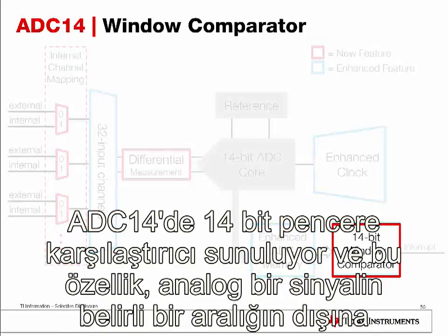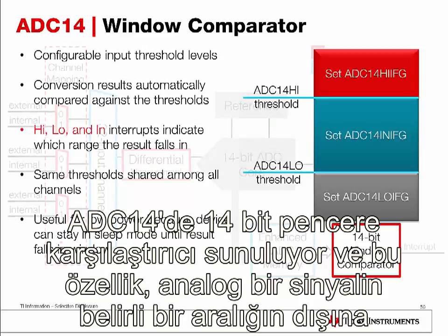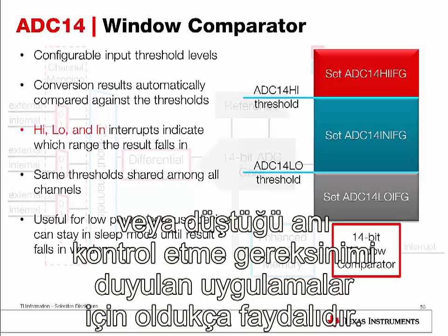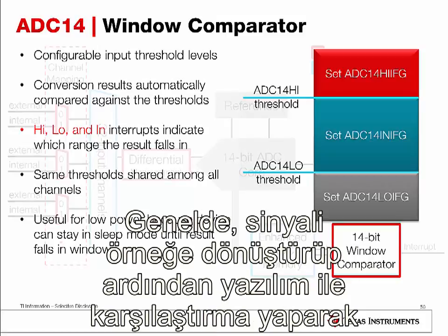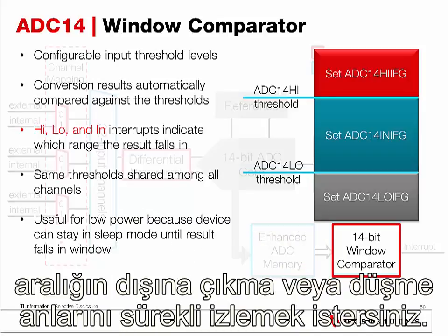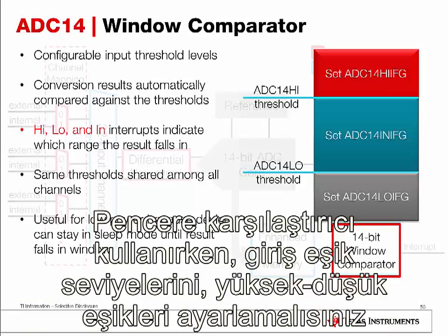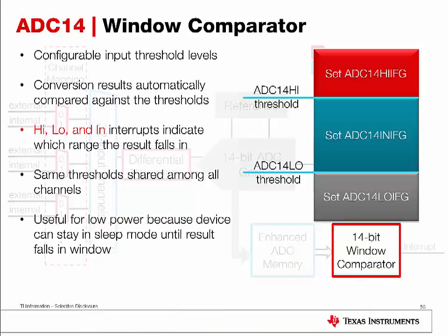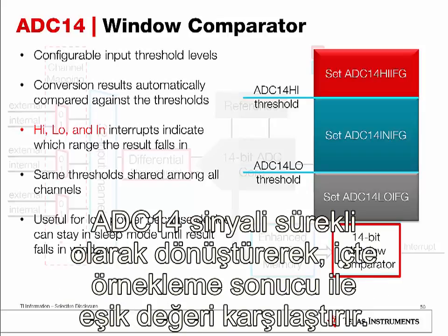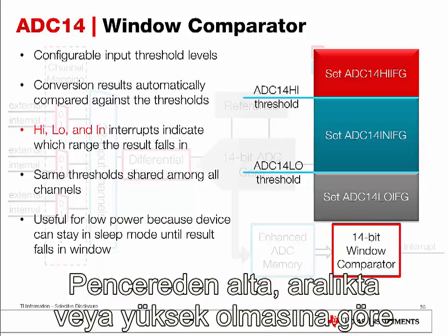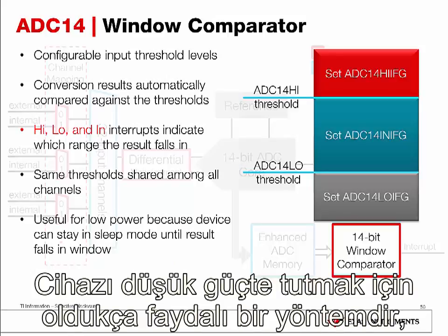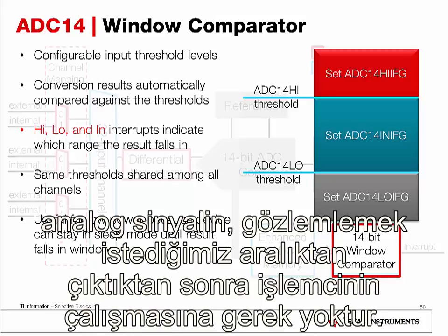First, let's take a look at the window comparator. The ADC14 introduces a 14-bit window comparator, which is extremely useful for applications that need to monitor an analog signal to check when it falls within or outside a certain range. Traditionally, you would have to constantly monitor the signal, perform the sample and conversion, and then compare in software. Using the window comparator, you can configure the high and low threshold levels, and the ADC14 will continuously convert and internally compare results against the thresholds, triggering interrupts depending on whether the value falls below, between, or above the window. This keeps the device in low power since no CPU activity is required until the analog signal falls into the range of interest.